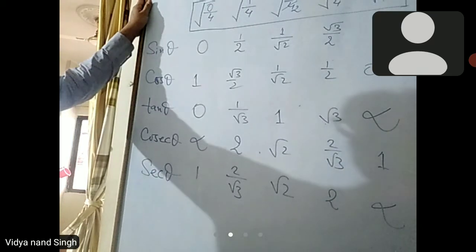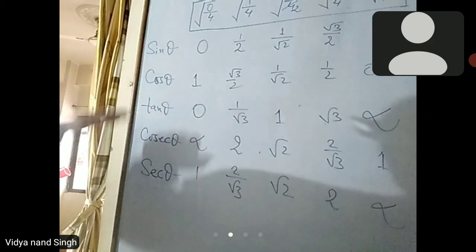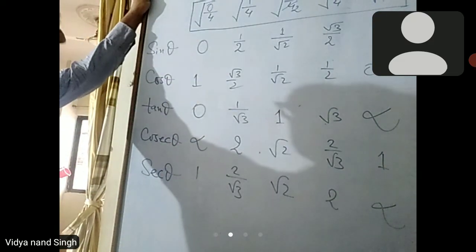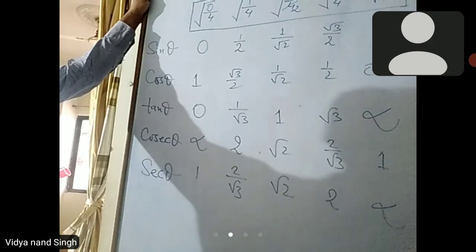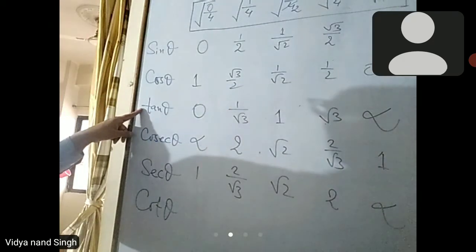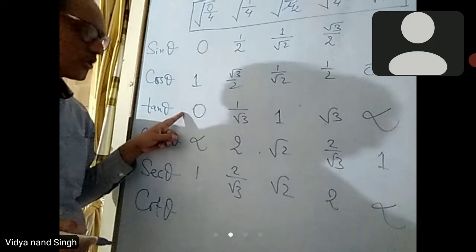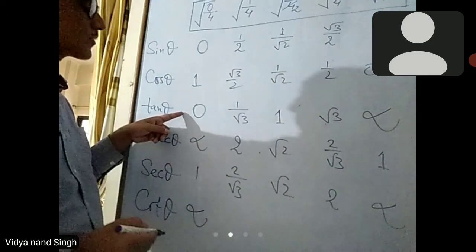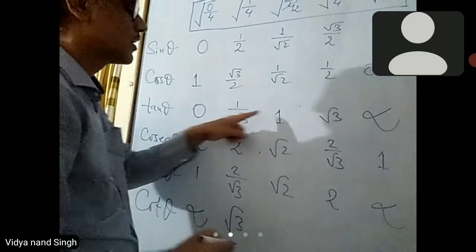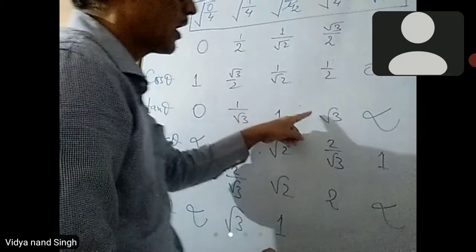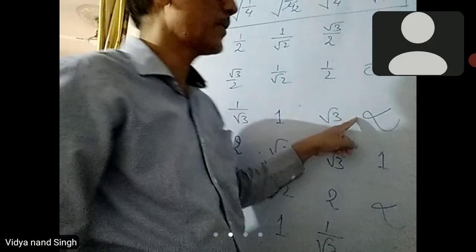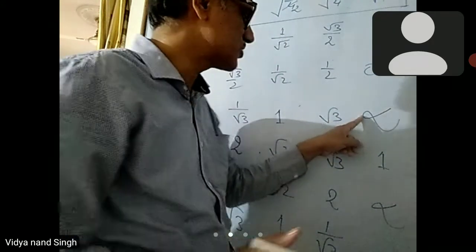0 by 1. Here you can see 1 by 1. Then 1 by 1 to 3, so 1 by 0 means infinity. 1 by root 3, root 3, and root 3 reciprocal, 1 by 1 to 3, infinity — infinity means 1 by 0, so 0 by 1, minus 0.